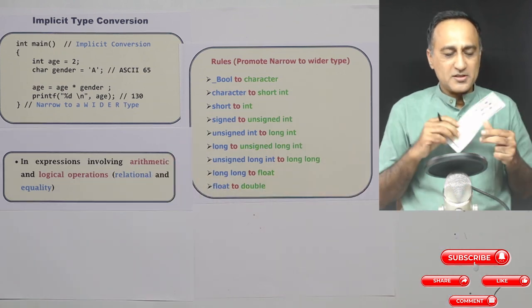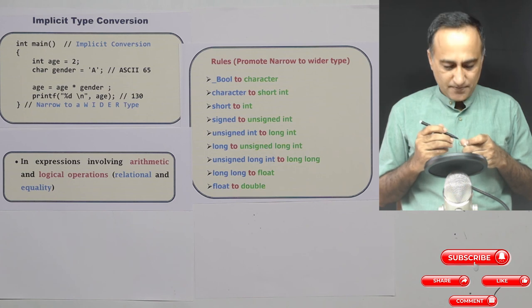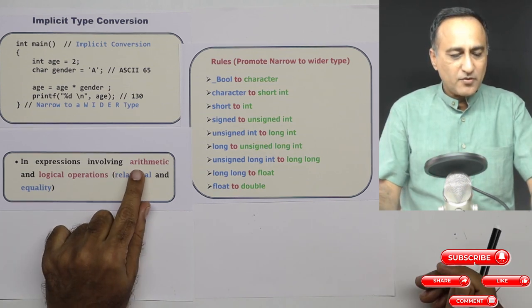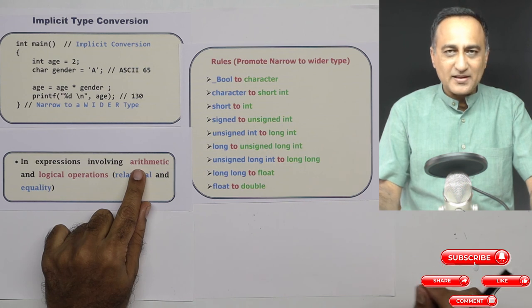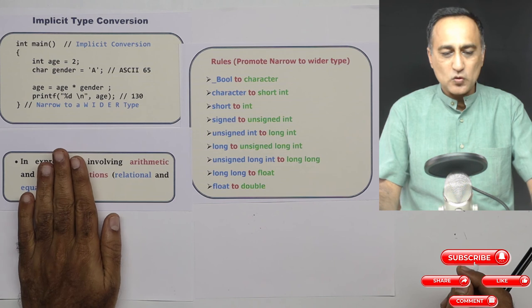So this is what you should really understand by implicit type of data type conversion. It is extensively used in when you're using it in comparison, greater than, lesser than, arithmetic expressions, equality, not equality, and so on.